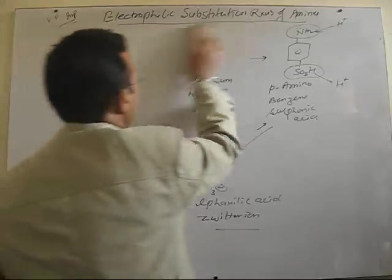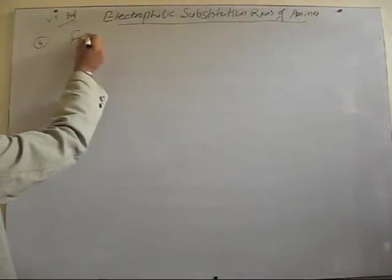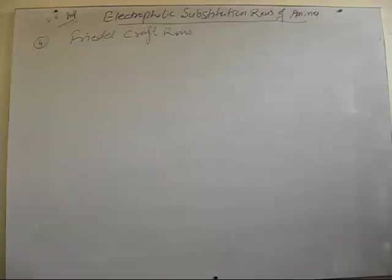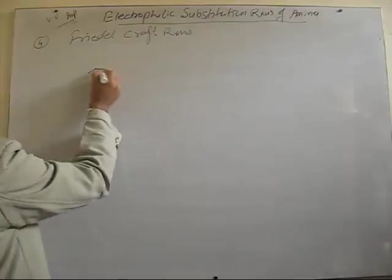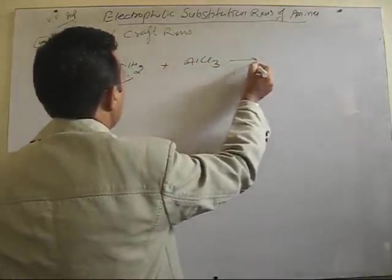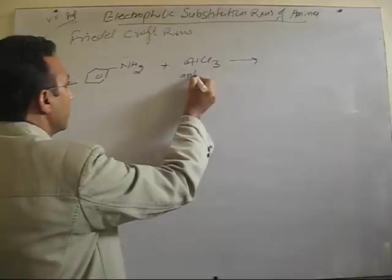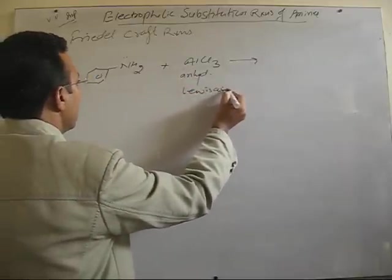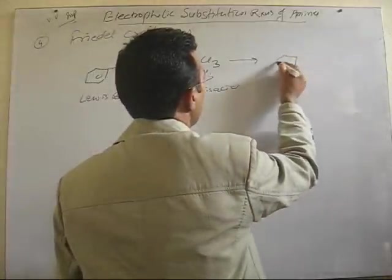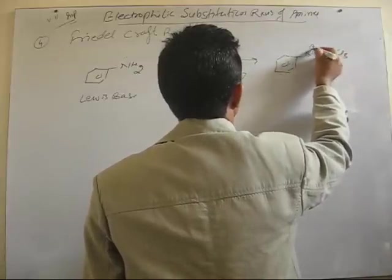Now, the last electrophilic substitution reaction, we will discuss Friedel-Crafts reactions. Friedel-Crafts reactions of amines. Now, because aniline is a base, and the catalyst used in Friedel-Crafts electrophilic substitution reaction is anhydrous aluminum chloride, which acts as a Lewis acid. This acts as a Lewis base. So, there is initial formation of a salt between these two, like this.